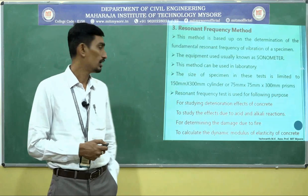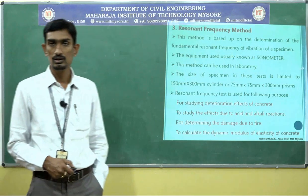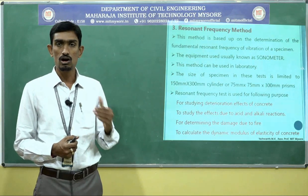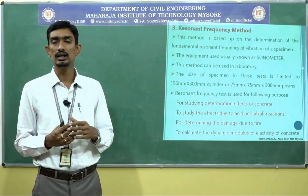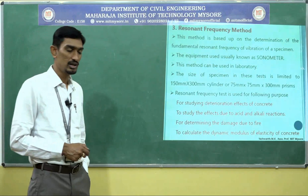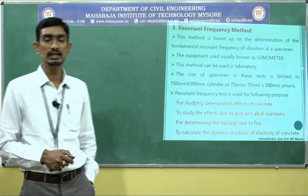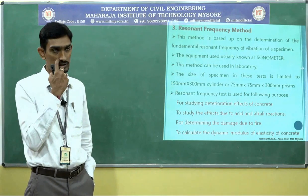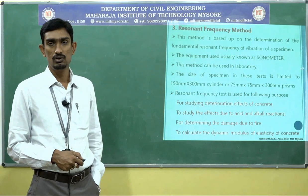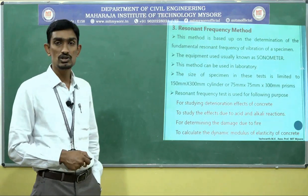The resonant frequency test is used for the following purposes: first, for studying deterioration effects — whether there are internal flaws or internal cracks. Second, to study the effect of acid and alkali reactions on the concrete, which can be assessed by noting frequency increase or decrease. Third, for determining the damage due to fire and the extent of that damage.